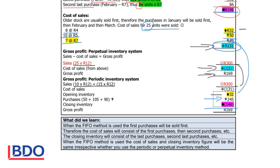You can see that whether you use the perpetual or the periodic system, in both systems your cost of sales will be R131, your sales will be R300, and in both systems your gross profit will be R169.